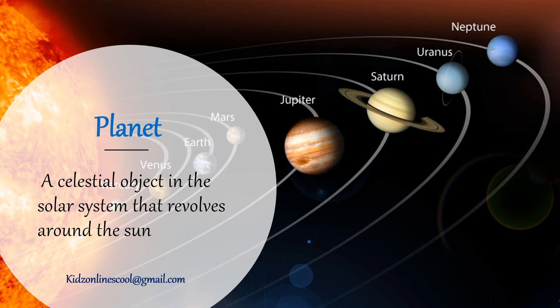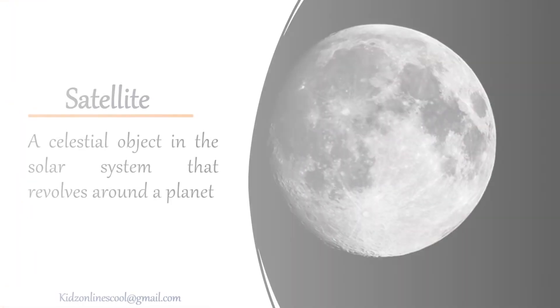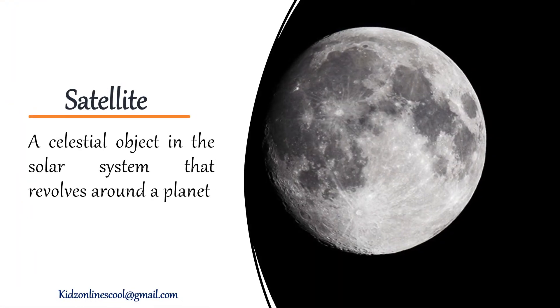Planet: a celestial object in the solar system that revolves around the sun. Satellite: a celestial object in the solar system that revolves around the planet.